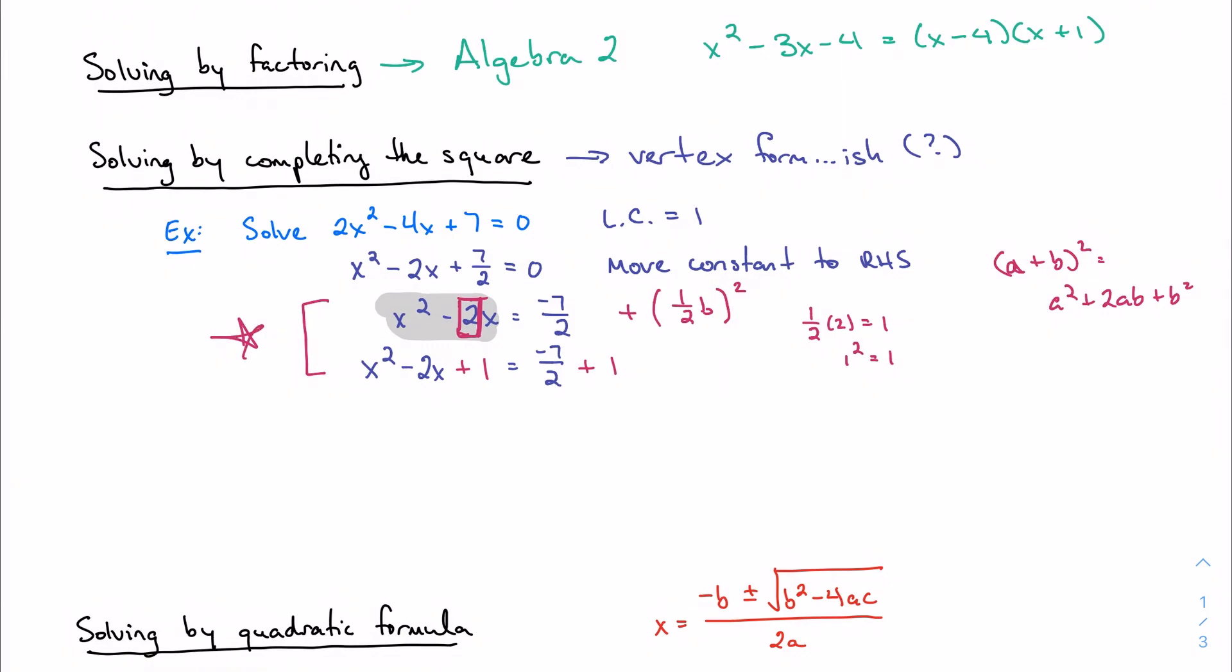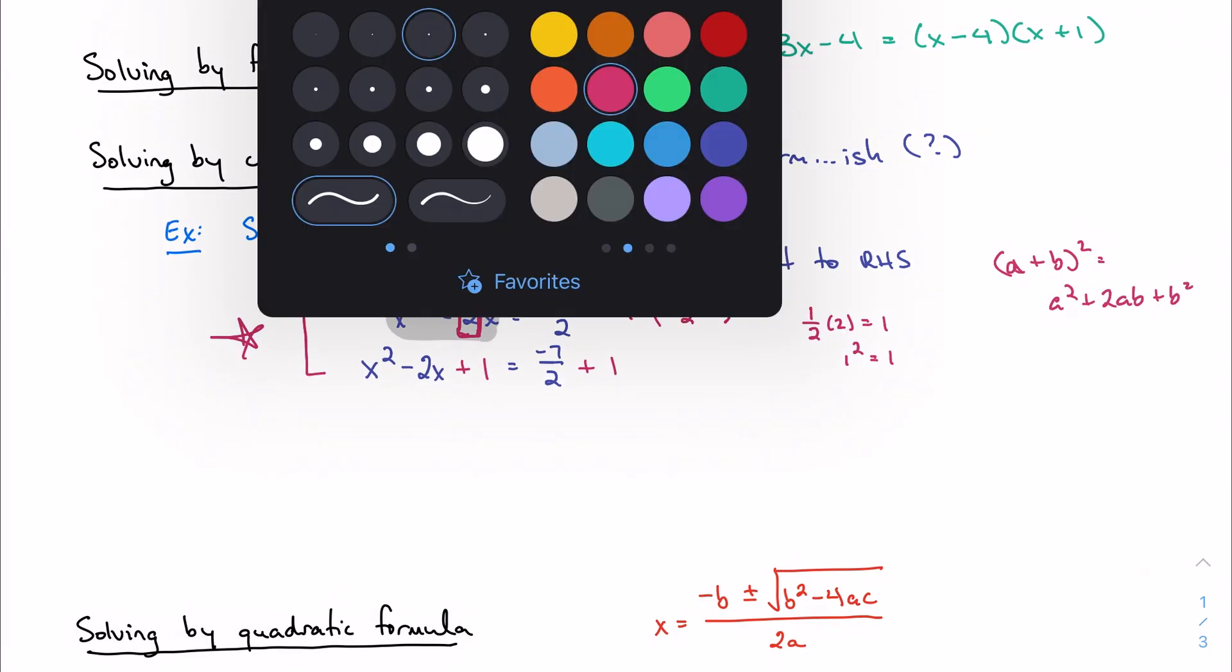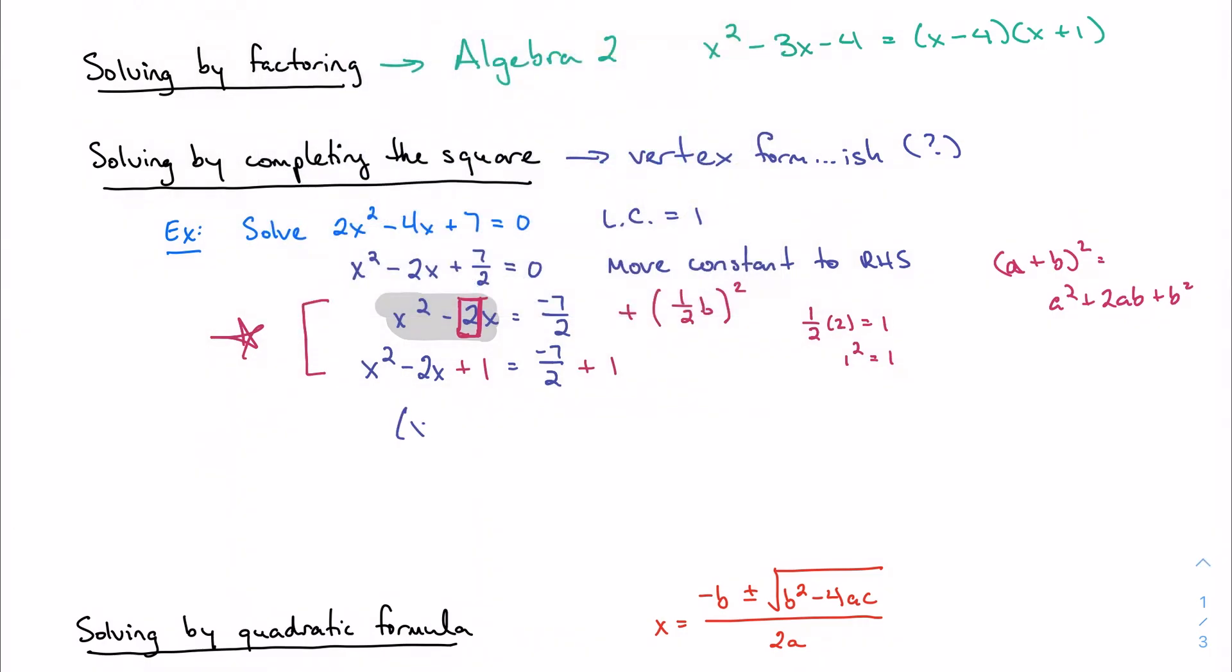So that step is really the big important step in completing the square. What this does for us, fortunately, is it turns my left-hand side into a perfect square trinomial. So my next step is just going to be to acknowledge that fact. It's going to be x minus 1 squared equals negative 5 halves over here. So we now have a perfect square.